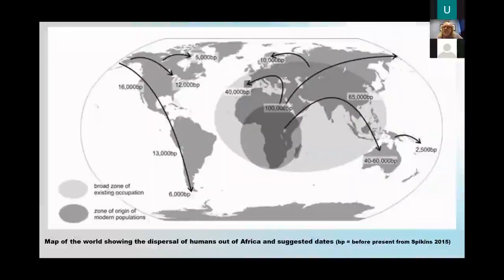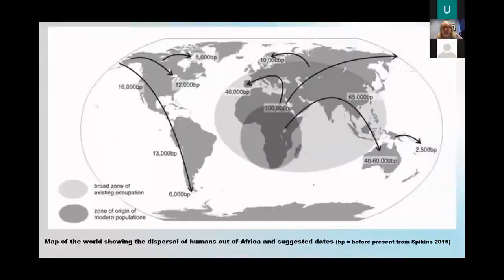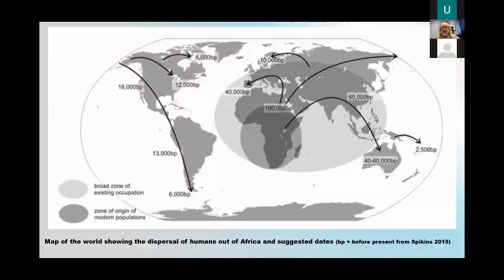An earlier map from an archaeologist at York University shows suggested dates for migration routes, including arrows going across into the Americas, with dates much later than everywhere else. However, those dates are now considered too late. There have been suggestions that people got across into Alaska about 25,000 years ago, and spread down into South America by at least 14,000 years ago, possibly more. All of these dates and routes are still being debated as new evidence comes to light.